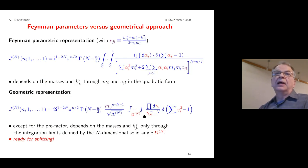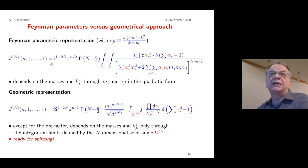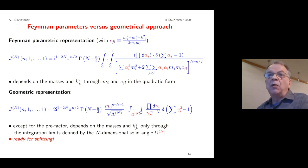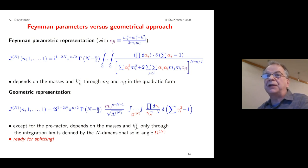To compare the two representations: in the standard Feynman parametric representation we have an N-fold integral with one delta function depending on masses and momentum invariants through the masses and c_{jl} in the quadratic denominator. In the geometric representation, except for the pre-factor, all dependence on masses and momentum invariants is contained in the N-dimensional solid angle — there is no dependence left in the integrand itself.